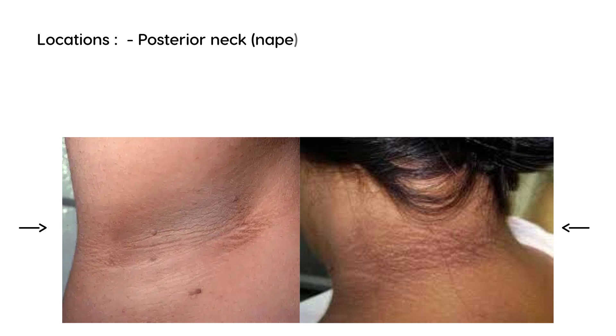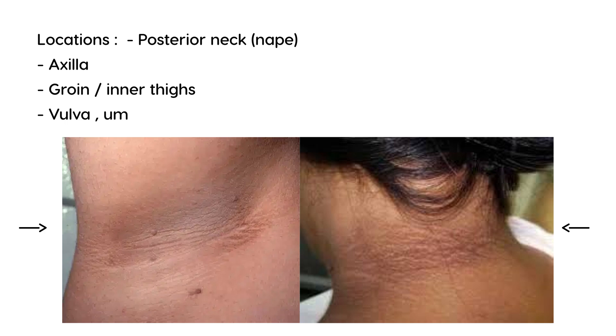In terms of locations, the most common areas where this can appear are the posterior neck, which is sometimes referred to as the nape, and the axilla or armpit. Other locations include the groin or inner thighs, and it can also appear in the vulva or umbilical area.